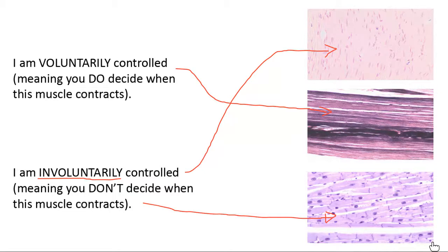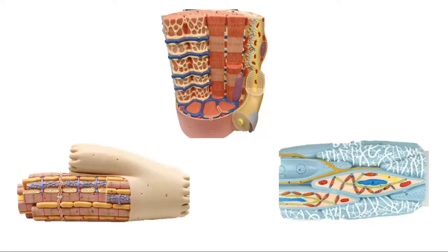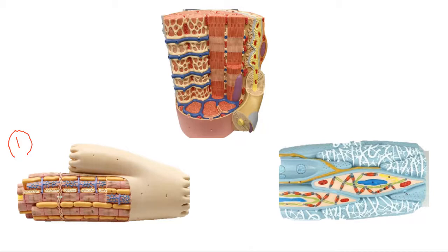We're going to move from muscle histology into our muscle models. We have three different models, each showing one type of muscle tissue. Let's start with tissue number one in the bottom corner of this model. Which kind of muscle tissue are we looking at here? This is cardiac muscle.